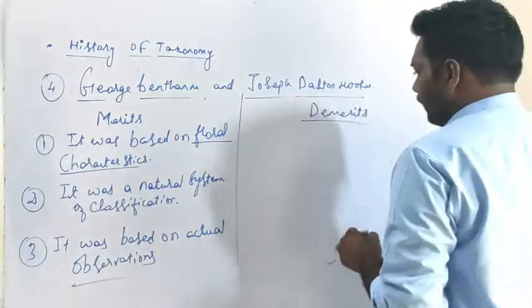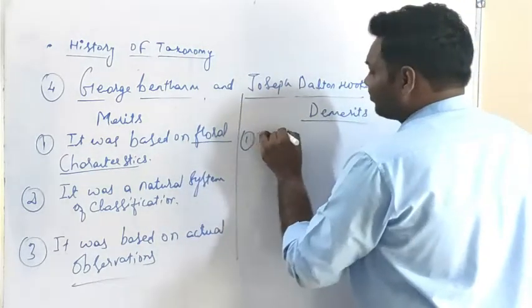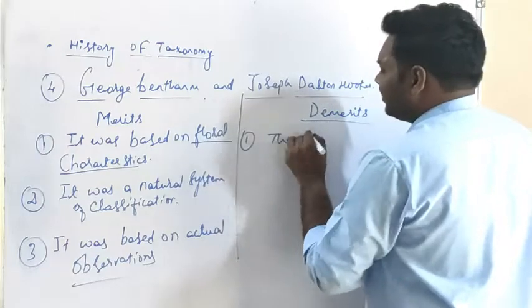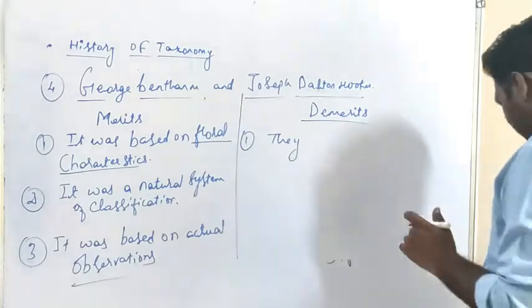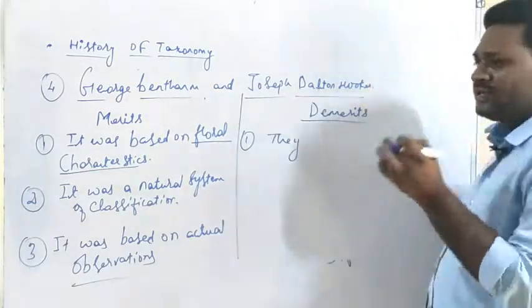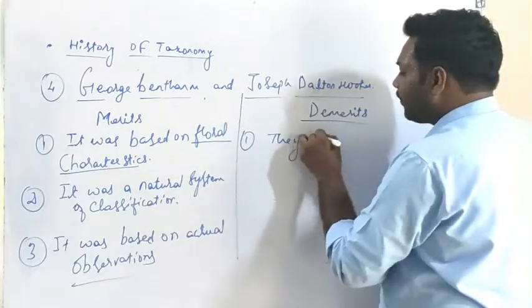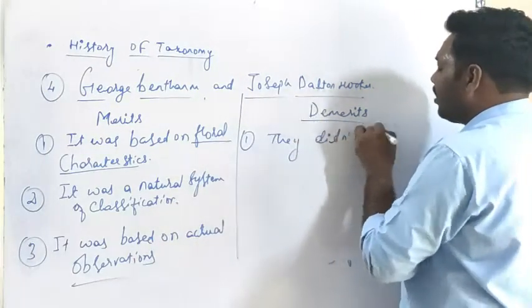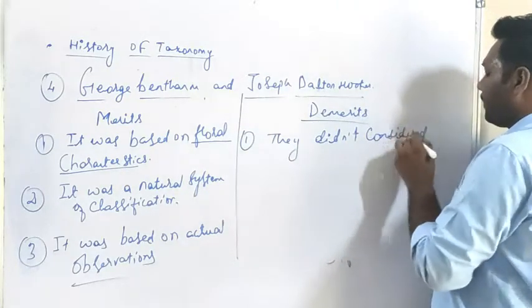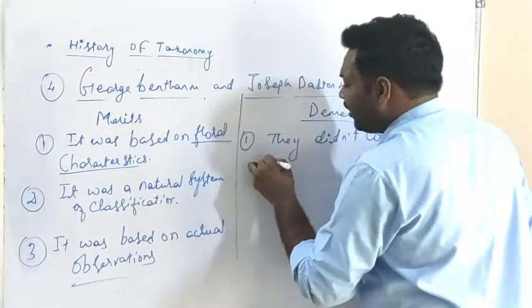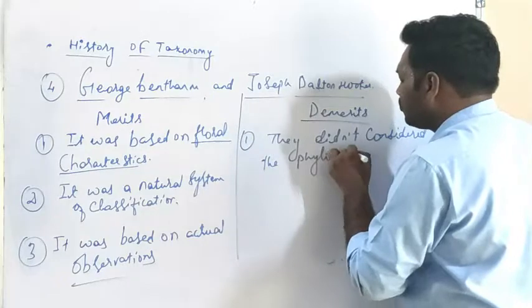Regarding the demerits, the first demerit is that they did not consider evolutionary characteristics, that is, phylogeny. They didn't consider phylogenetic characters.